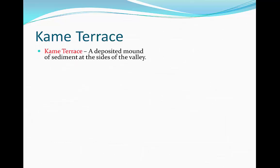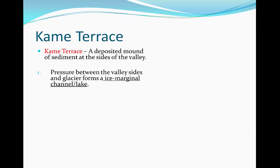We can also get kame terraces. These are deposited mounds of sediment at the sides of the valley. Pressure between the valley sides and the glacier forms an ice marginal channel, or an ice marginal lake if it isn't moving. These are channels or lakes formed in between the glacier and the valley sides due to the pressure exerted.